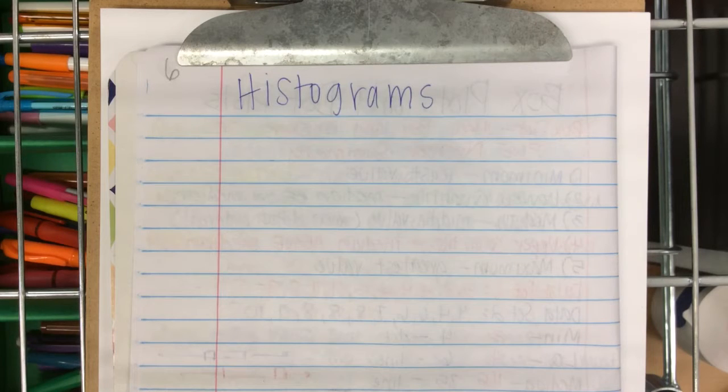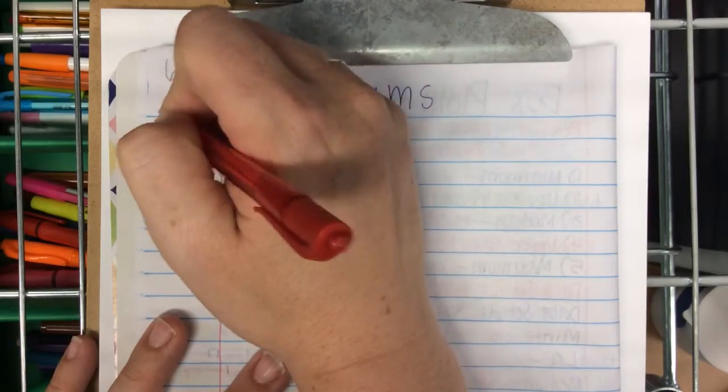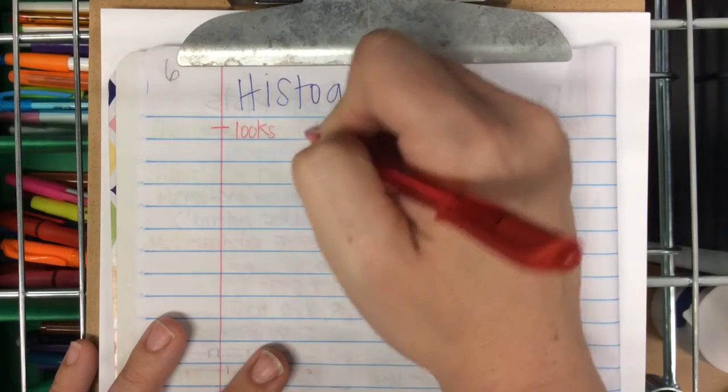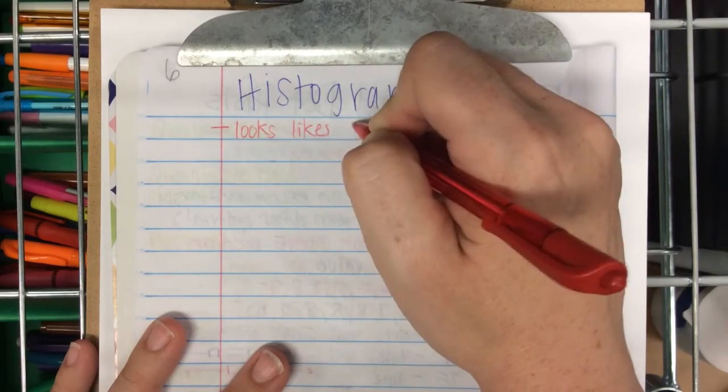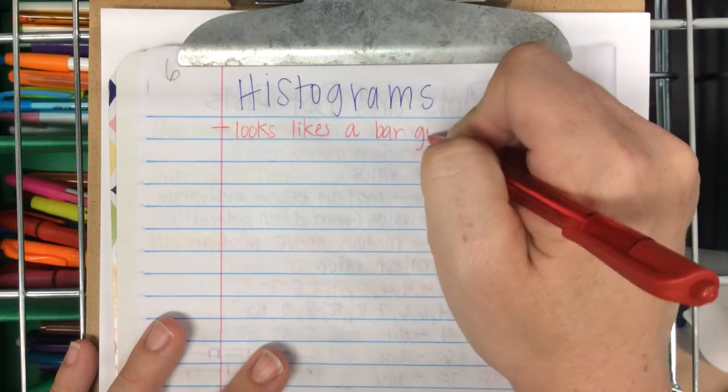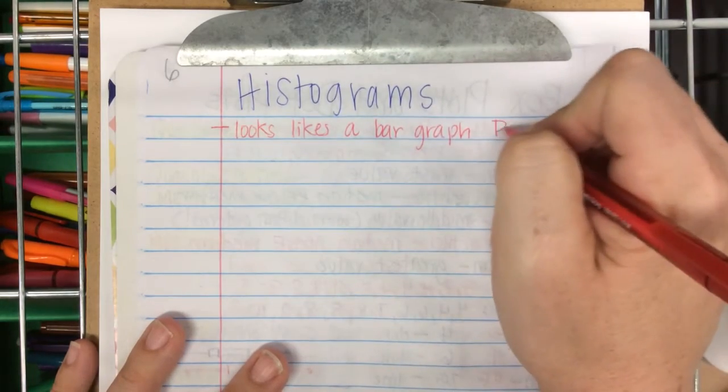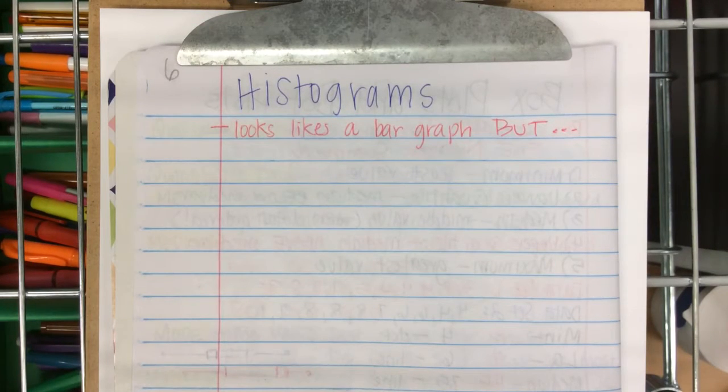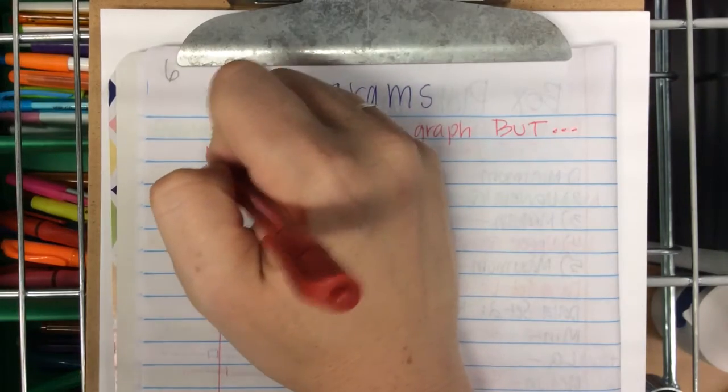But it's a completely different type of graph, because in a histogram, although you look at it and you say to yourself that looks like a bar graph, there are two really big differences. So, a histogram looks like a bar graph, but there are two really big differences about histograms and bar graphs.